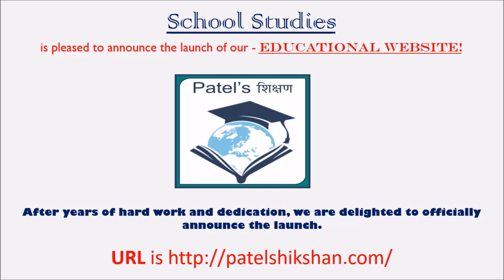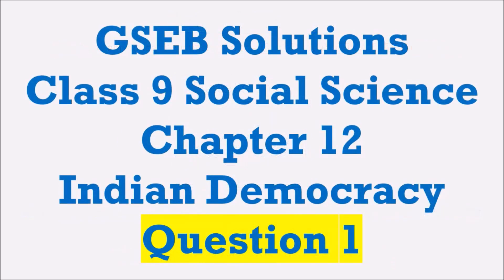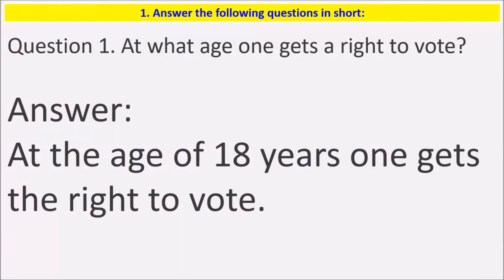Today we will see a video related to GSB solution, Class 9 Social Science Chapter 12: Indian Democracy. Question 1: Answer the following questions in short. At what age does one get the right to vote? At the age of 18 years, one gets the right to vote.